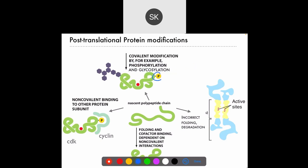Phosphate groups are usually involved in either activating or deactivating a protein — it really depends on the particular protein whether the phosphate group is going to make it active. We're talking mostly about enzymes here. Sometimes adding a phosphate group makes the protein or enzyme active, and removing the phosphate group then causes the protein to become inactive or at least less active.